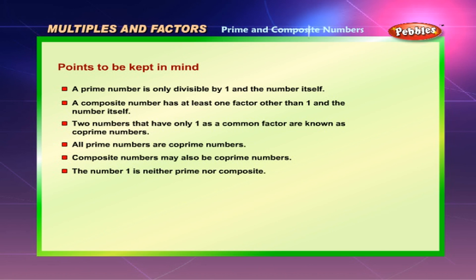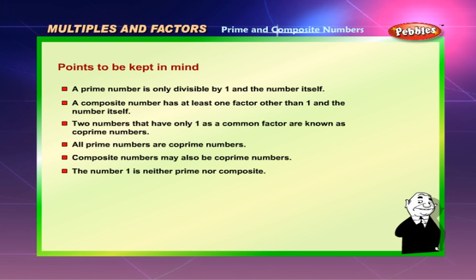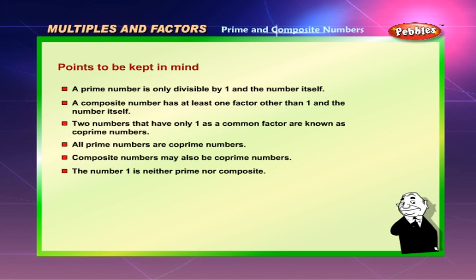Points to remember: a prime number is only divisible by 1 and itself. A composite number has at least one factor other than 1 and itself. Two numbers with only 1 as a common factor are co-prime numbers. All prime numbers are co-prime; composite numbers may also be co-prime. The number 1 is neither prime nor composite.